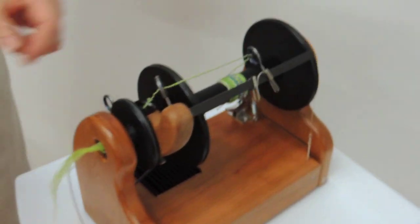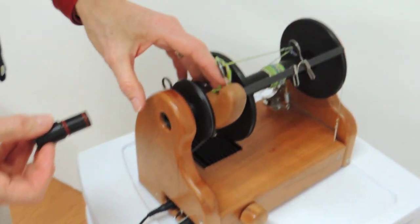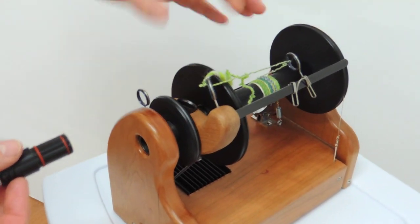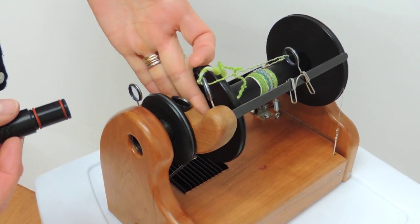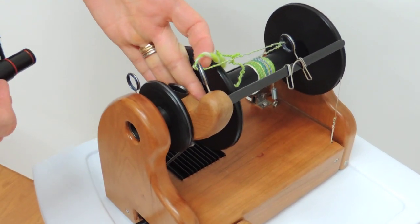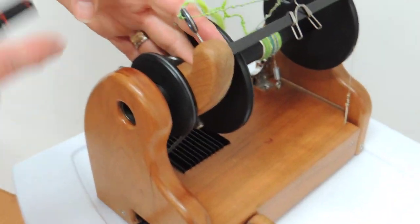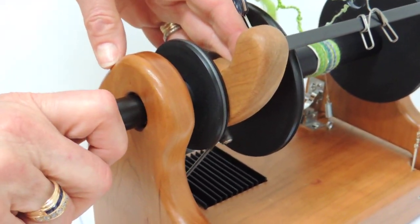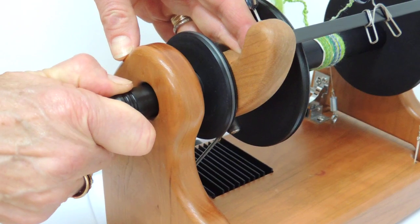Now let me show you on the flyer, on the spinner. You want to support your flyer whether it's our flyer or the wooly winder. You hold it back here behind the cross arms just to keep it from pushing on back. You put your orifice reducer in and then twist and push.